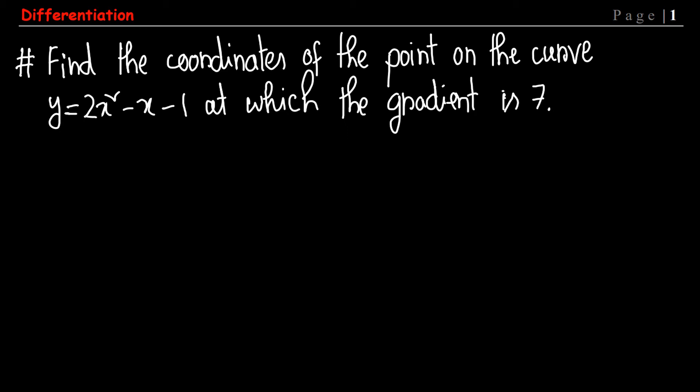In the next tutorial we will discuss three questions in a row. The first question is: find the coordinates of the point on the curve y equals 2x squared minus x minus 1 at which the gradient is 7.